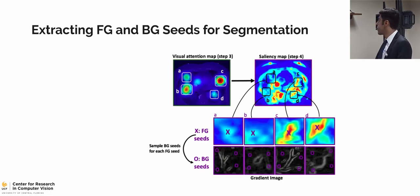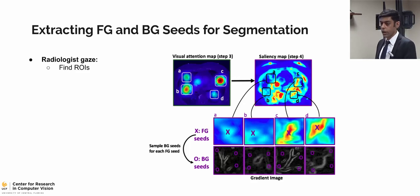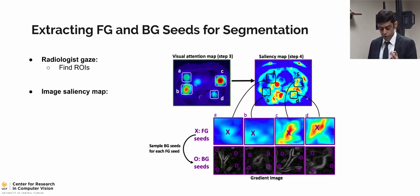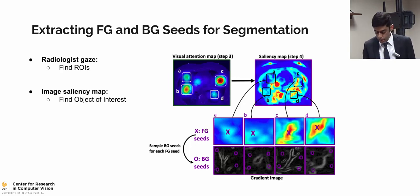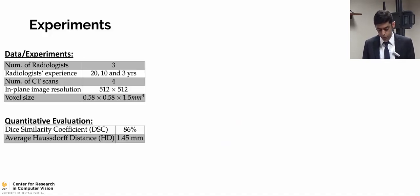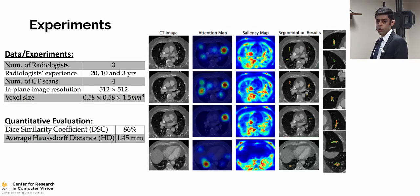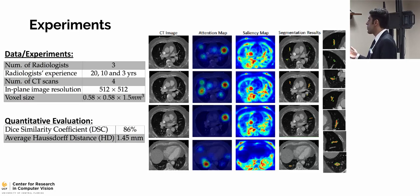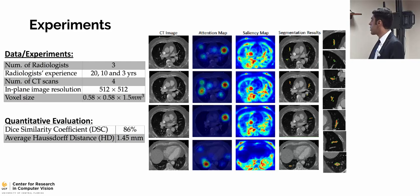How do we define the foreground and background seeds? We have extracted the radiologist's ROIs based on the gaze data. Given that point, it might not exactly land on a specific organ or tissue. So we use image saliency maps to find the most salient object in a region and put the foreground seed there. Then we use image gradient to find the object vicinity and put background seeds randomly outside that object, and then perform the segmentation. Results with the three radiologists studying four CT scans showed a Hausdorff distance of 1.45 mm and a Dice similarity of 86.